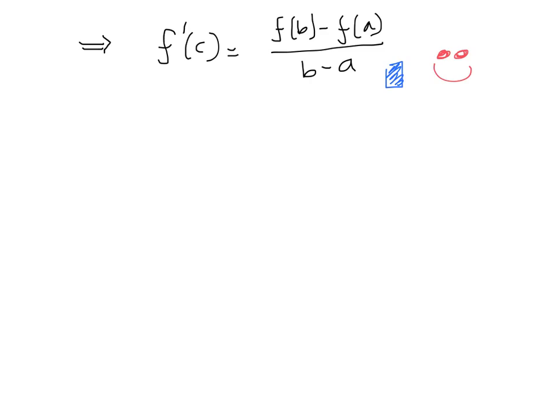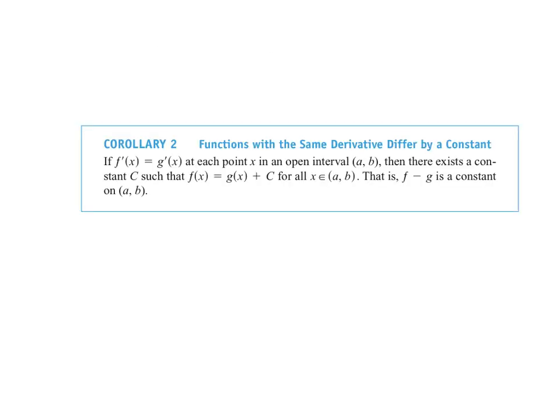Now let's talk about the corollary. It basically says that if two functions have the same derivative, they differ by a constant. Officially stated: if f'(x) = g'(x) at each point x in an open interval (a, b), then there exists a constant C such that f(x) = g(x) + C for all x in (a, b). That is, f minus g is a constant.